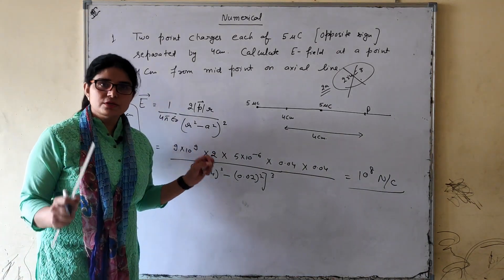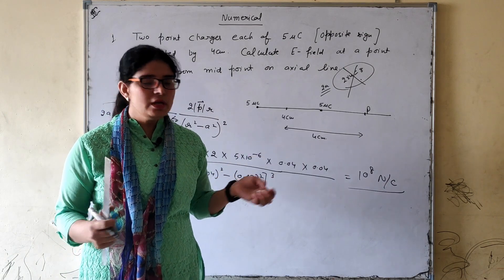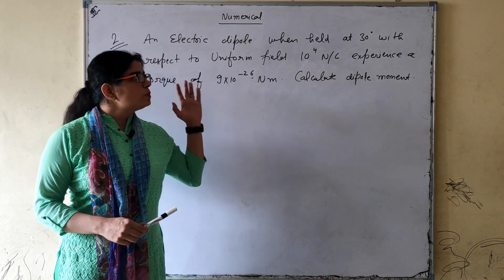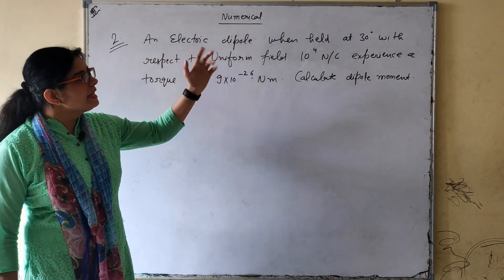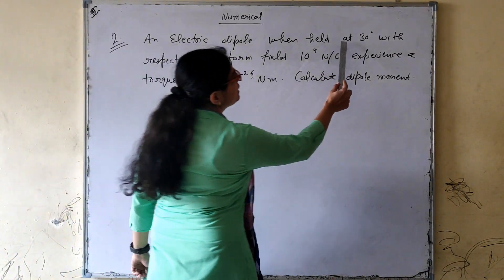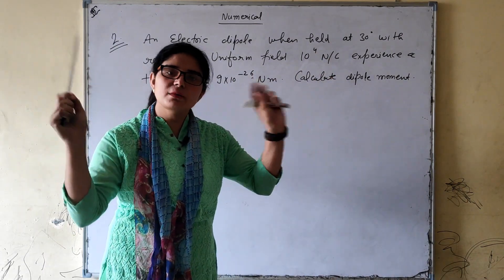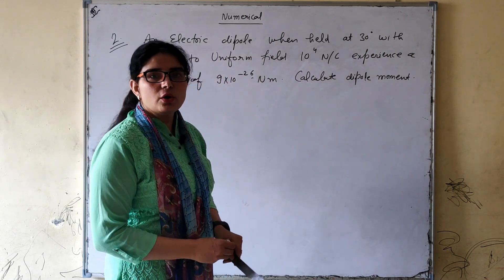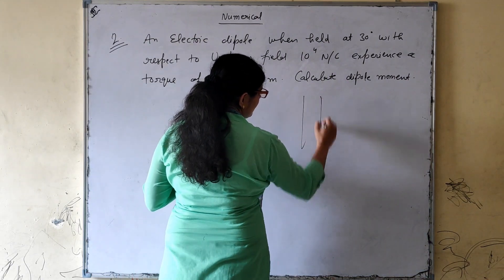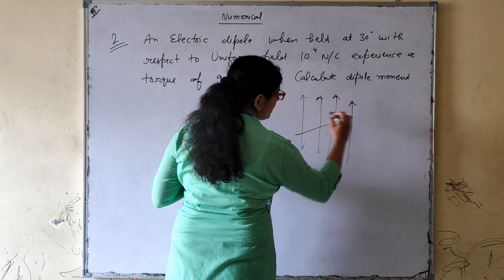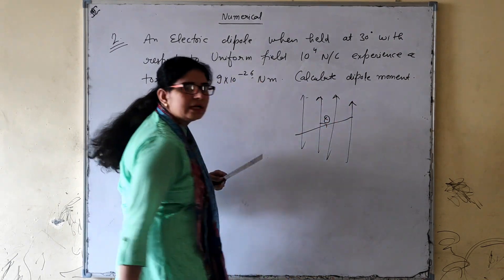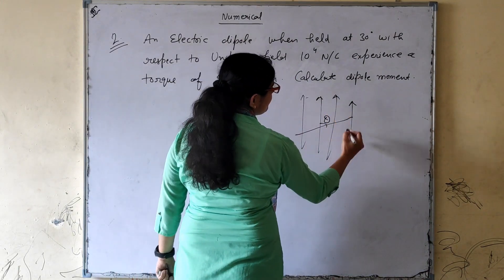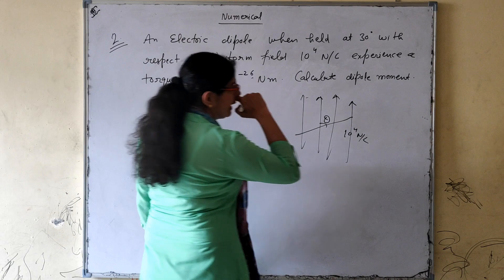Now the second question is about an electric dipole. An electric dipole is held at 30 degrees with respect to a uniform electric field. Recall the torque topic — we placed a dipole at angle theta with the electric field. Here, theta is given as 30 degrees, and the uniform field is 10⁴ newton per coulomb. The dipole experiences a torque of 9 × 10⁻²⁶ N·m.